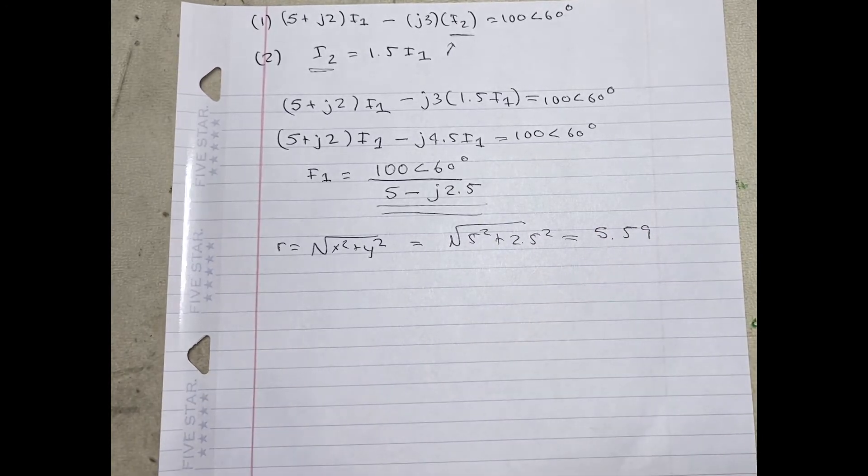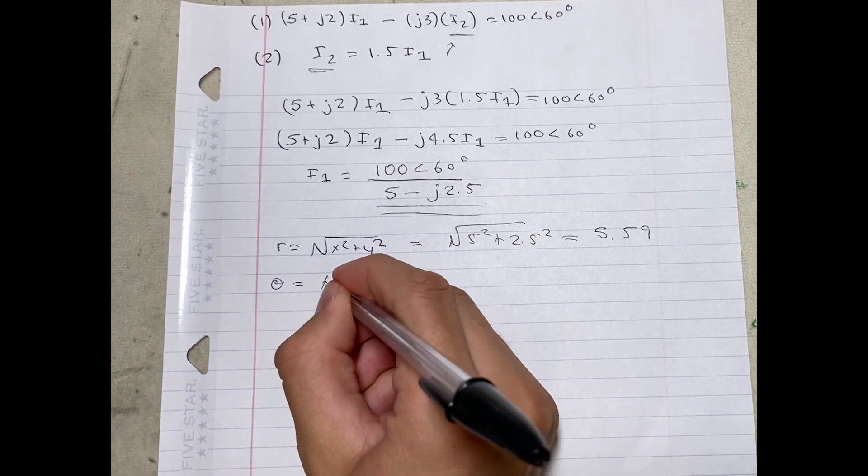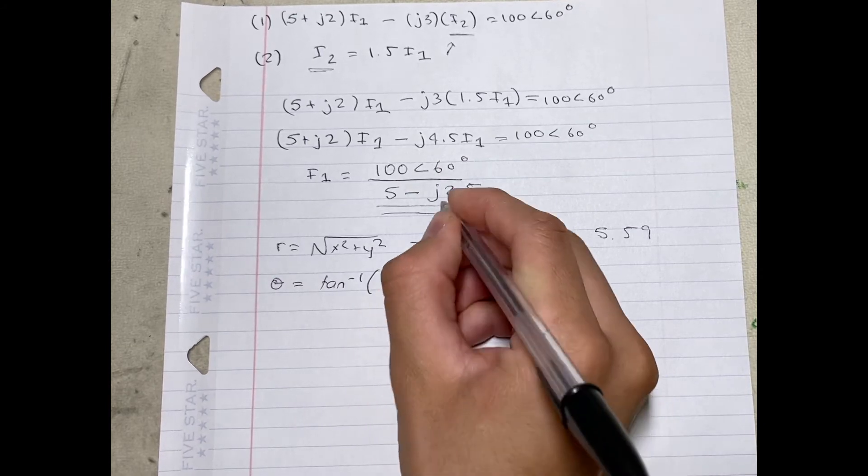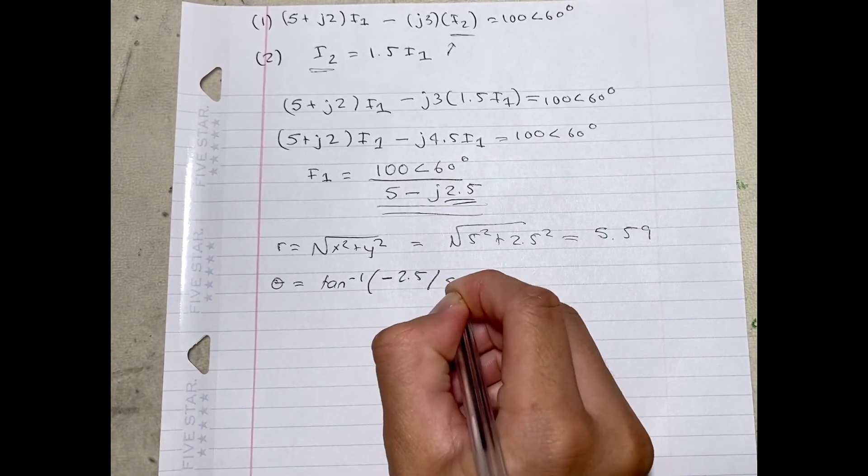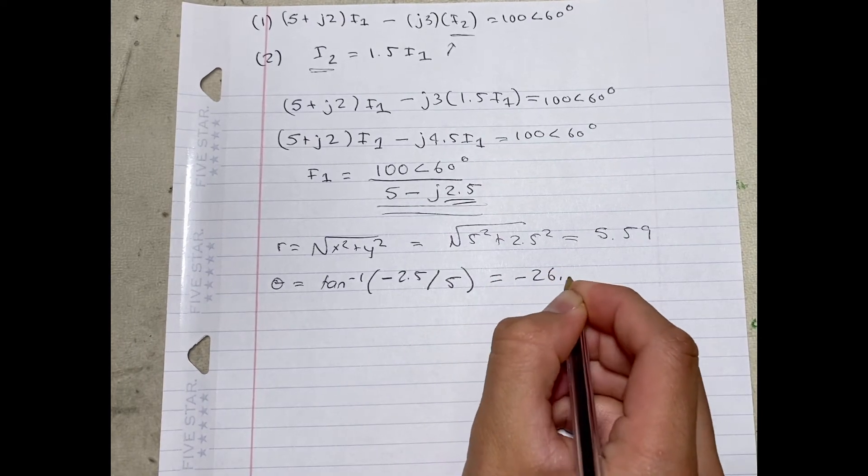We also need to solve for the angle, where theta is equal to the inverse tan of negative 2.5 divided by 5. This is going to give us negative 26.56 degrees.